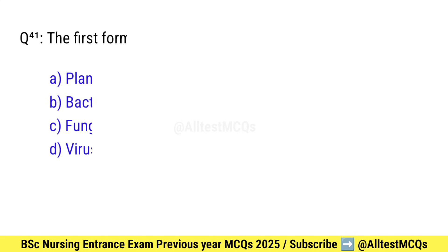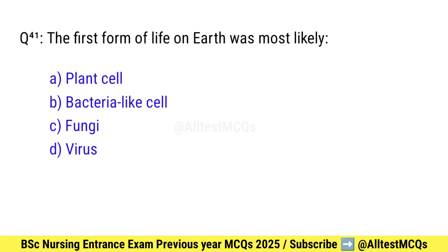Question number 41. The first form of life on earth was most likely what? Right option is B: Bacteria-like cell.